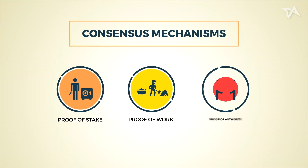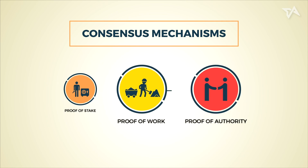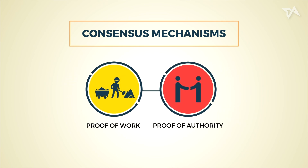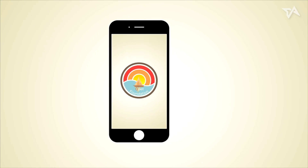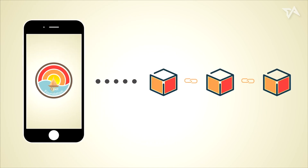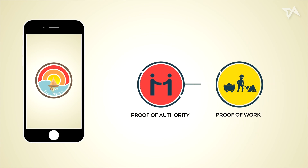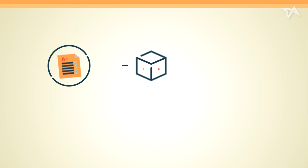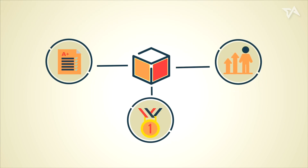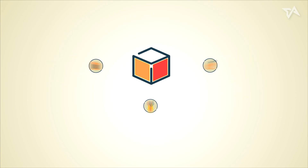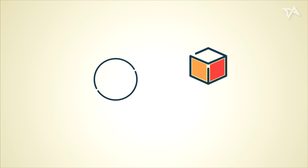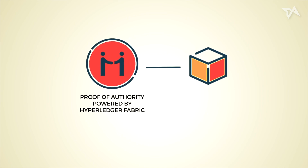Whilst traditional blockchain companies exist on a single consensus mechanism, some innovative ones are adopting multiple consensus protocols. Take Opet Foundation for example, who is building a unique blockchain to store data collected on its tuition companion chatbot app by applying both proof-of-authority and proof-of-work protocols. Data such as students' academic, extracurricular, and personality profiling records are stored on the blockchain and potentially validated via a proof-of-authority framework powered by Hyperledger Fabric.